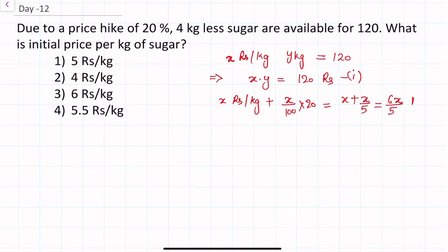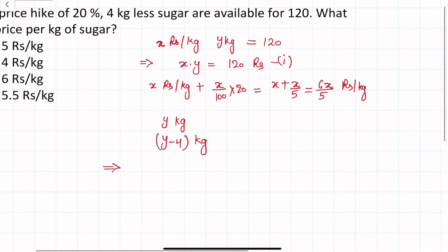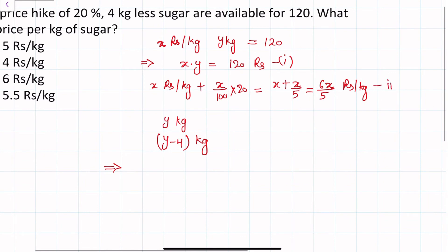This new price is per kg and the amount is 4 kg less. The initial amount was y kg and the final amount is y minus 4 kg. The product is 120. This is equation 2 and the product is 120.